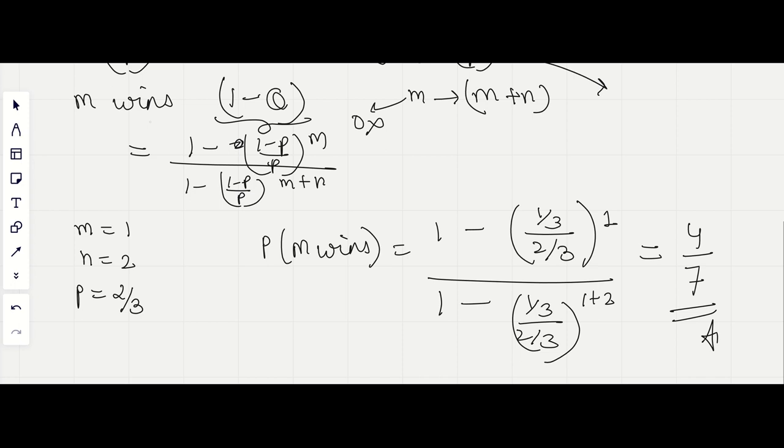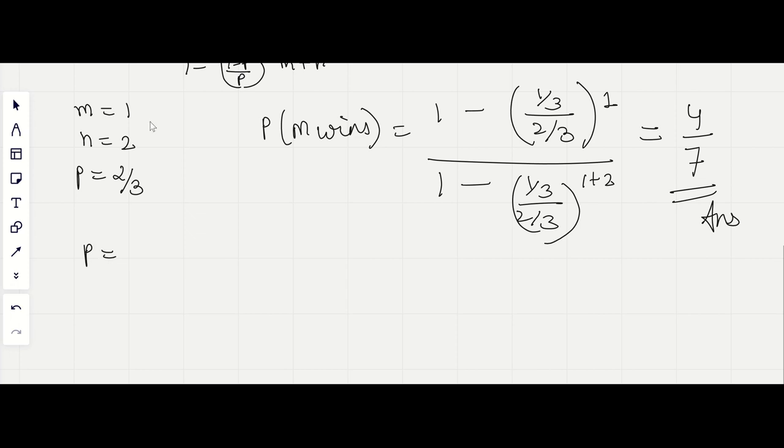Now if suppose P is equal to 1/2, then we would see that our probability would become 0 by 0. So we will apply L'Hopital's rule. And it will come that P is equal to m / (m + n).